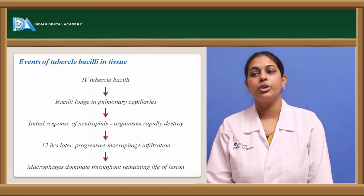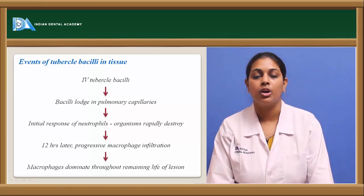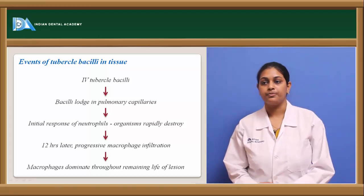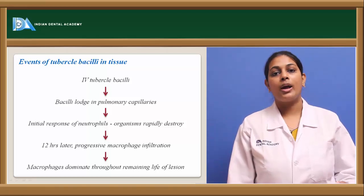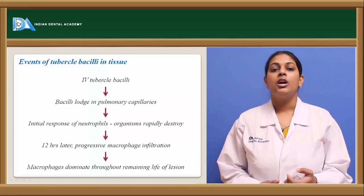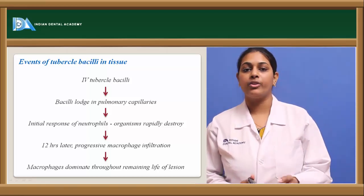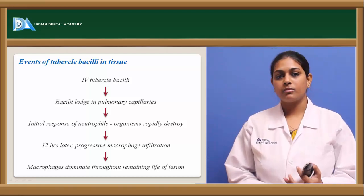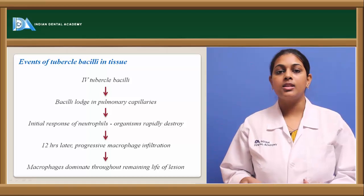Twelve hours later, there is progressive macrophage infiltration, since macrophages are the second line of defense. Neutrophils have only a one to two day lifespan and are replaced by macrophage infiltration. Macrophages then become the dominant cells throughout the remaining life of the lesion. If the tubercle bacilli are inhaled into the lung alveoli, macrophages predominate and their major function is phagocytosis — engulfing the foreign antigen.